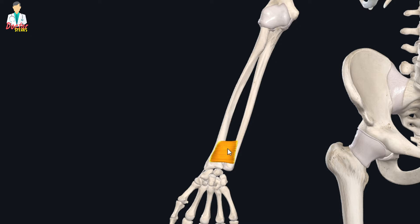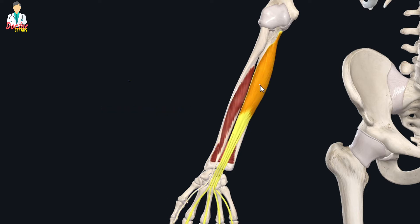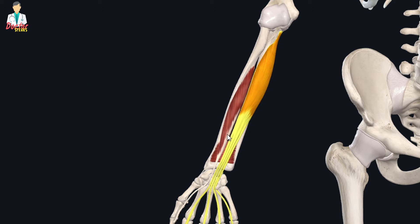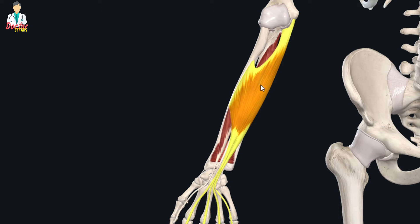The other two deep muscles of this compartment are the flexor pollicis longus and the flexor digitorum profundus. These three muscles lie deep to the intermediate muscle of the anterior forearm, which is the flexor digitorum superficialis muscle.